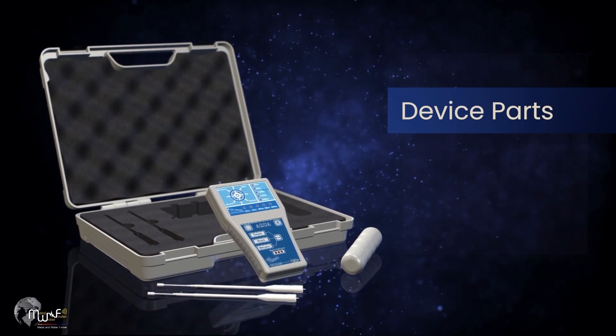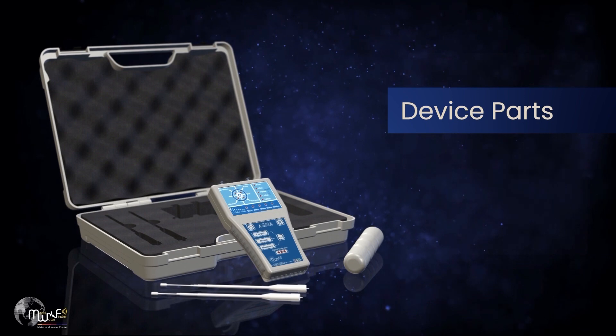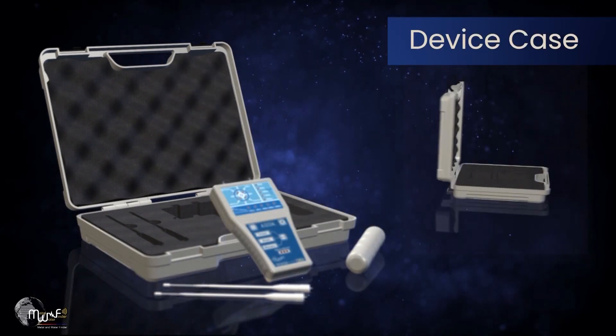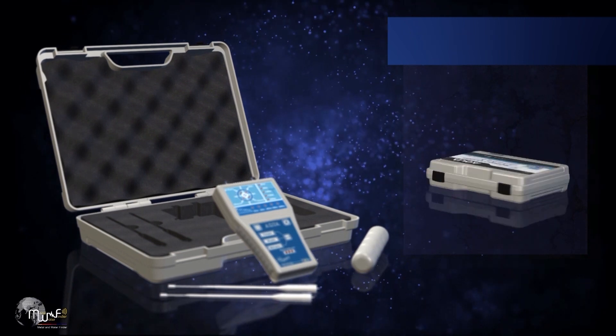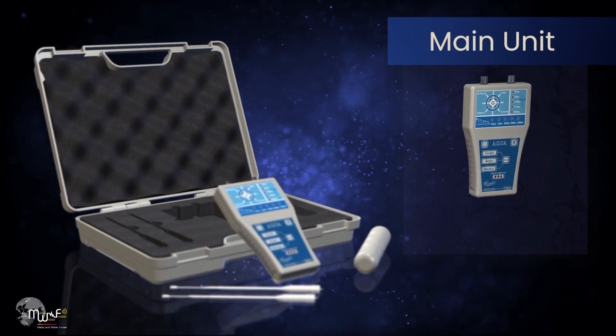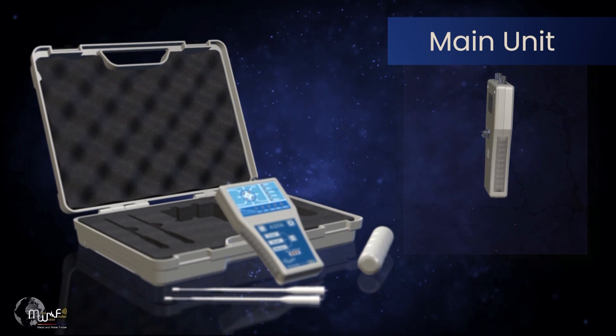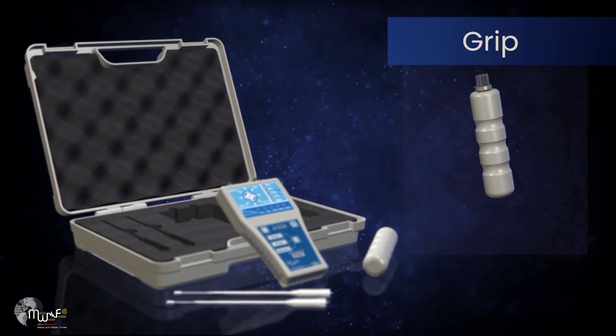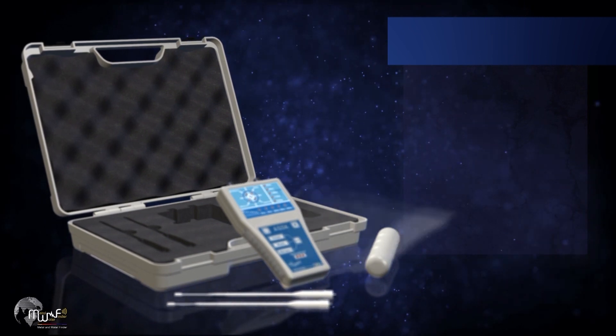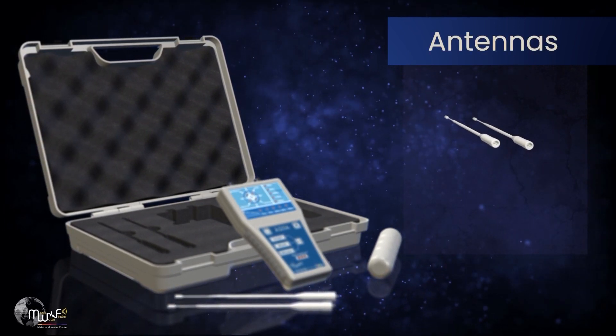Explanation of parts and segments of the machine: carrying case, main unit for tuning and searching, carrying handle, and transfer antennas.